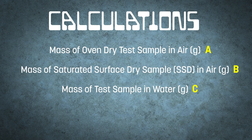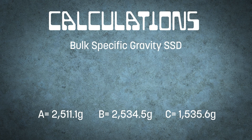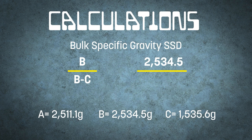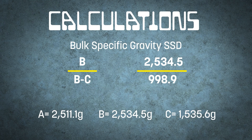All of our weights should be recorded in grams. For this example, the weight of the oven dried specimen is 2,511.1 grams, the weight of our SSD sample in air is 2,534.5 grams, and the weight of our submerged sample is 1,535.6 grams. The calculation for bulk specific gravity in the SSD condition is B divided by (B minus C), or 2,534.5 divided by (2,534.5 minus 1,535.6), which equals 2,534.5 divided by 998.9 grams, giving us a bulk specific gravity SSD of 2.537.